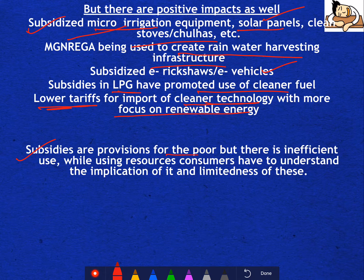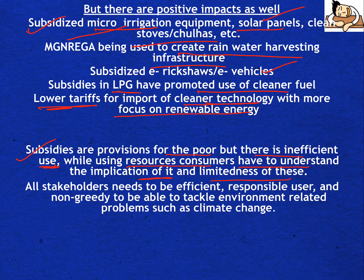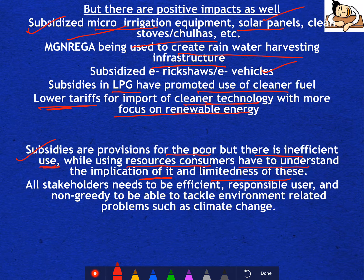Subsidies are provisions for the poor, but there is inefficient use. While using resources, consumers have to understand the implications and the limited nature of these resources, so they have to be used properly. All stakeholders — whether consumers or the government — need to be efficient, responsible users and non-greedy to be able to tackle environment-related problems such as climate change. Subsidies are important, but in India they need to be used wisely.